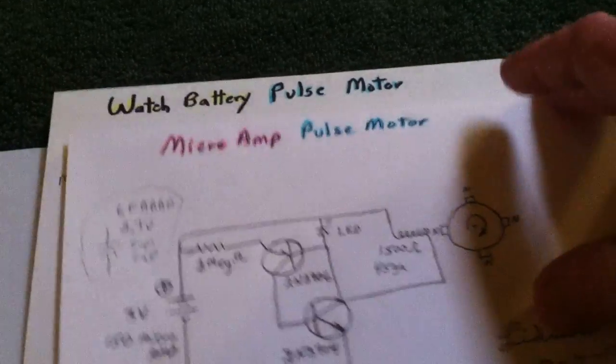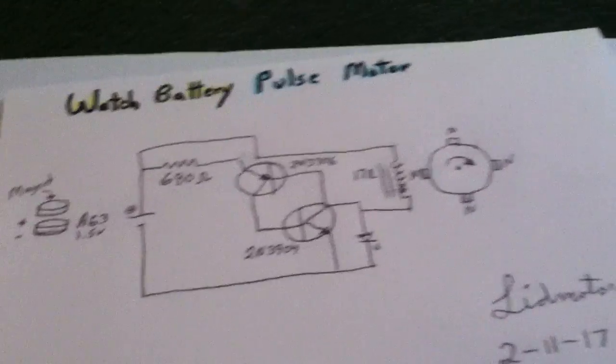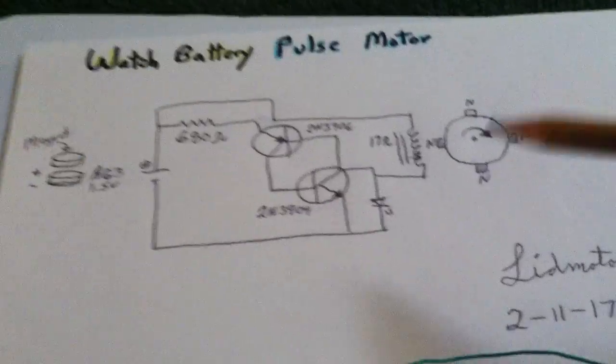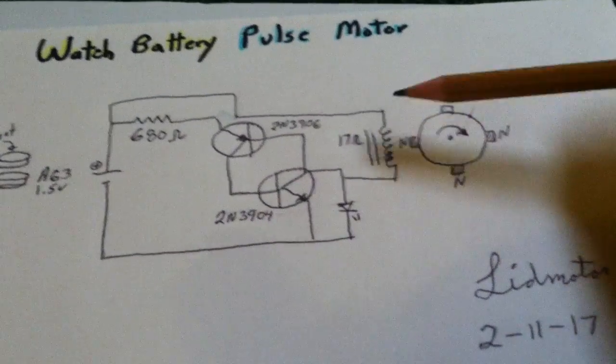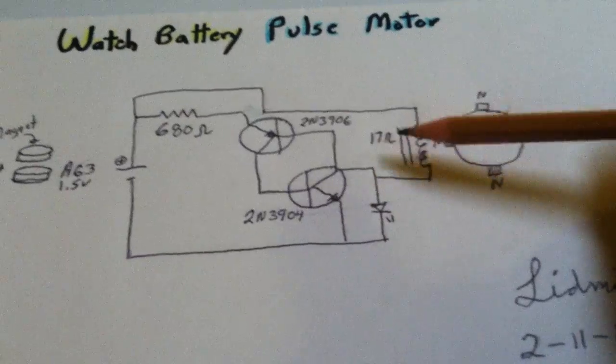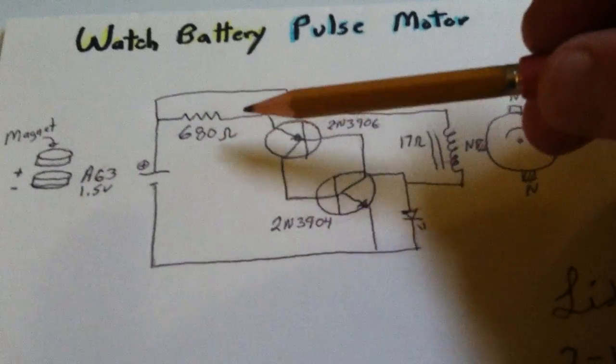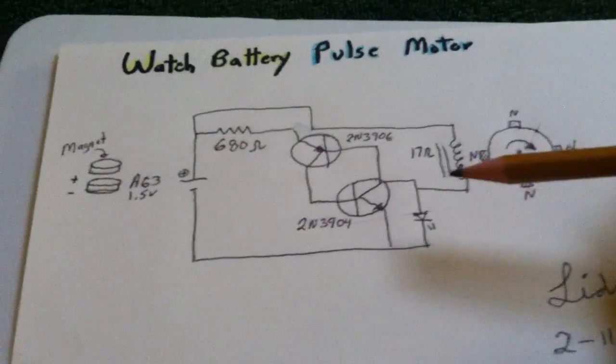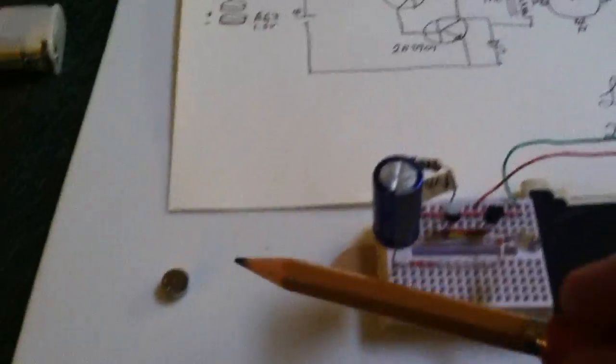This was the original circuit that I had in my last video that was running on the watch battery here, which was 1.5 volts. And I'm just using a ferrite core coil that had a lot lower ohm rating on it, and then a lot lower ohm rating on this.